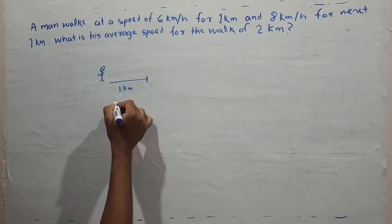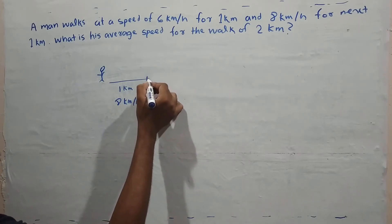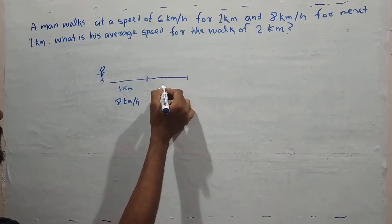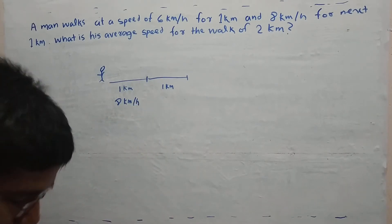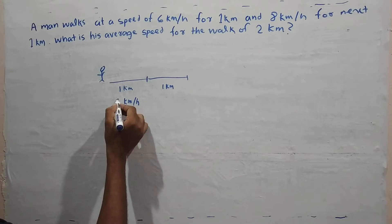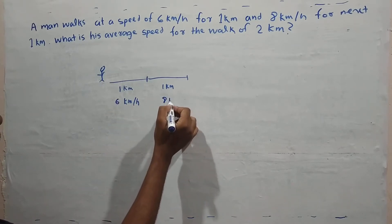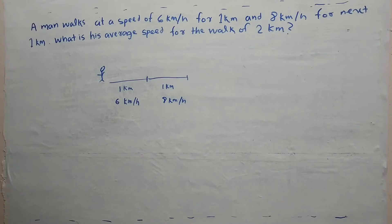The man goes 6 km per hour for 1 km and then 8 km per hour for the next 1 km. What is his average speed?